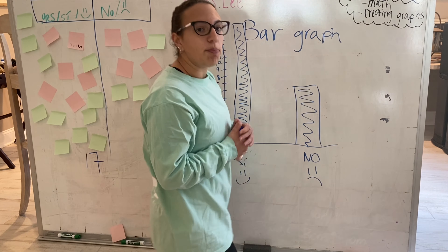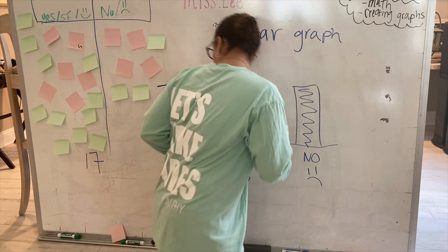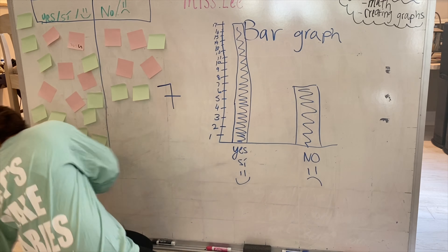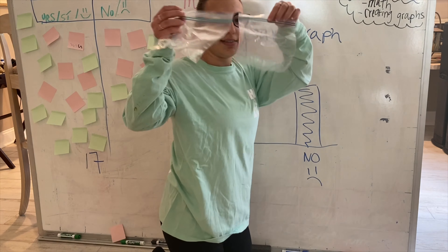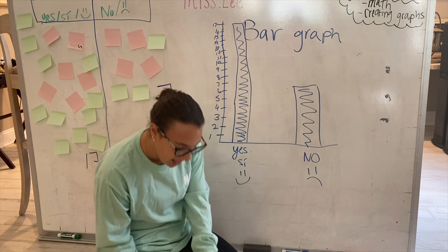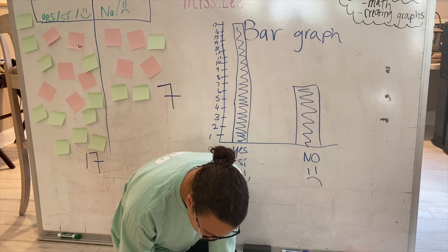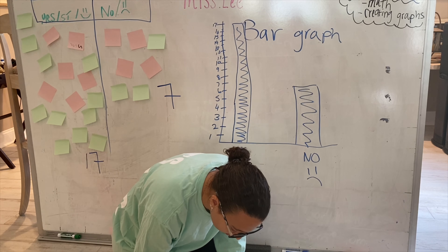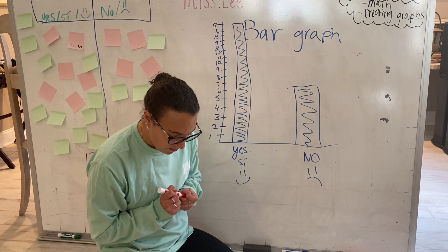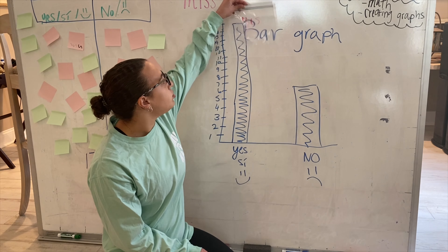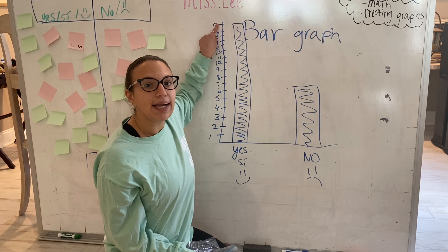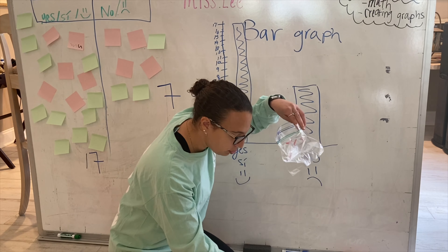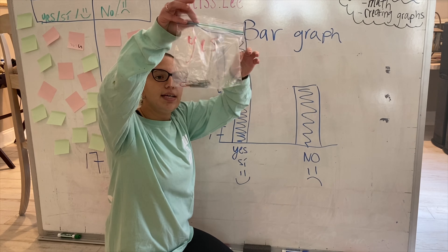Now let's see if we can represent the data in a different way. Right over here I have two bags. On one of them let's write yes, and on the other let's write no. How many students liked the food? Let's look back at this graph — seventeen. So let's put seventeen paper clips in here, because we're using the paper clips to represent our data. Seventeen.